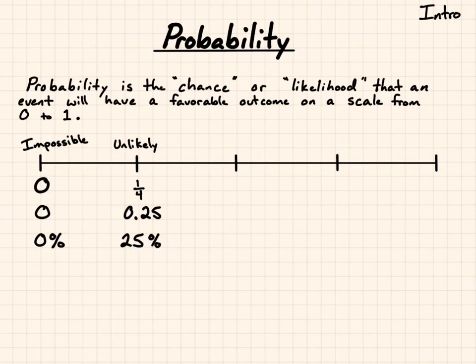And then, getting closer to likely to happen, we have 50-50, or equally likely to happen or not. That's halfway. Could happen, could not, you don't know. It's a flip of a coin. That would be one-half. And that's 0.5 as a decimal or 50% as a percentage.